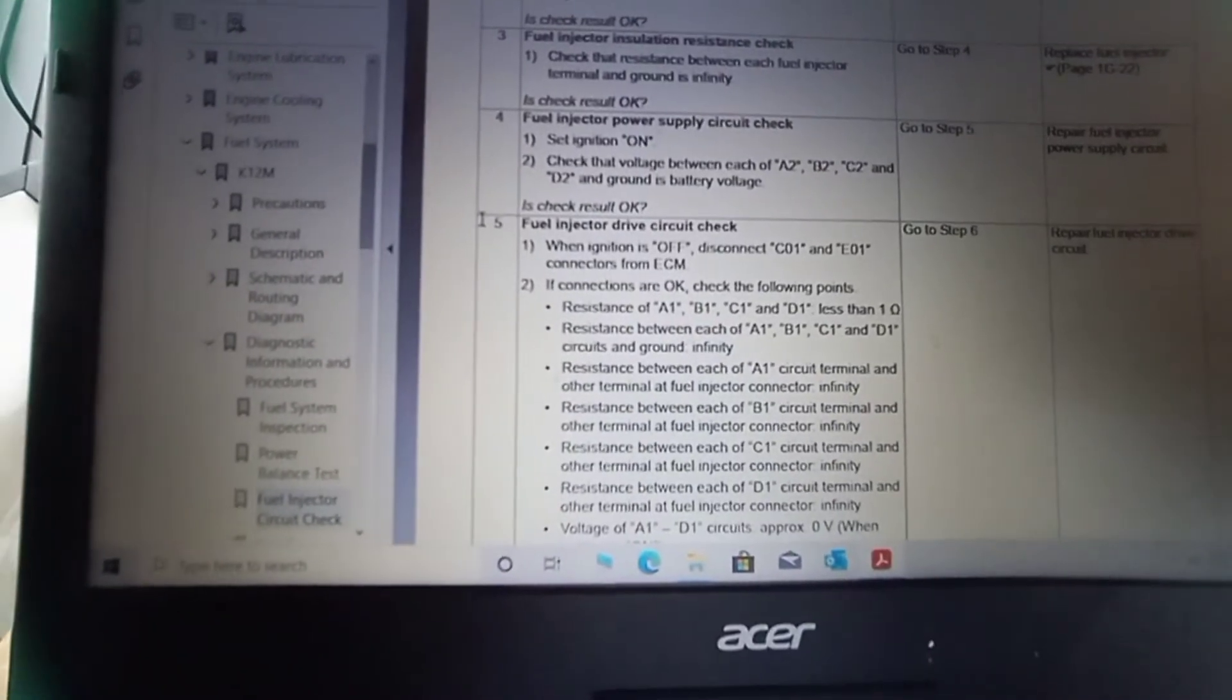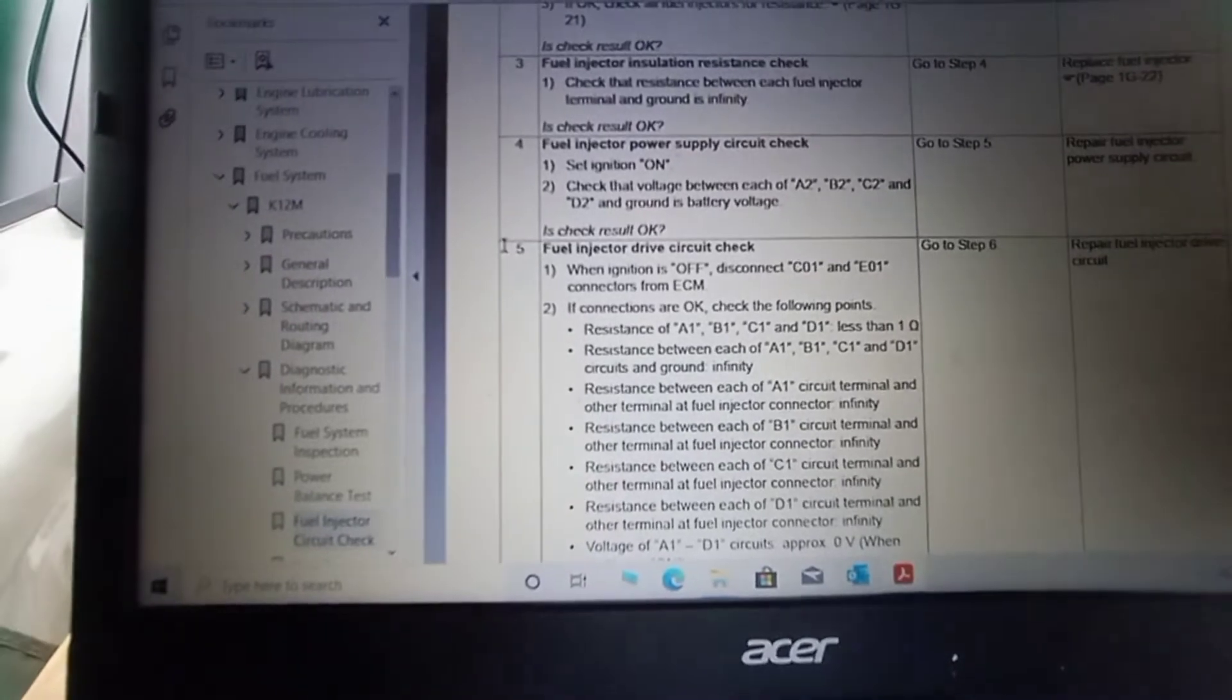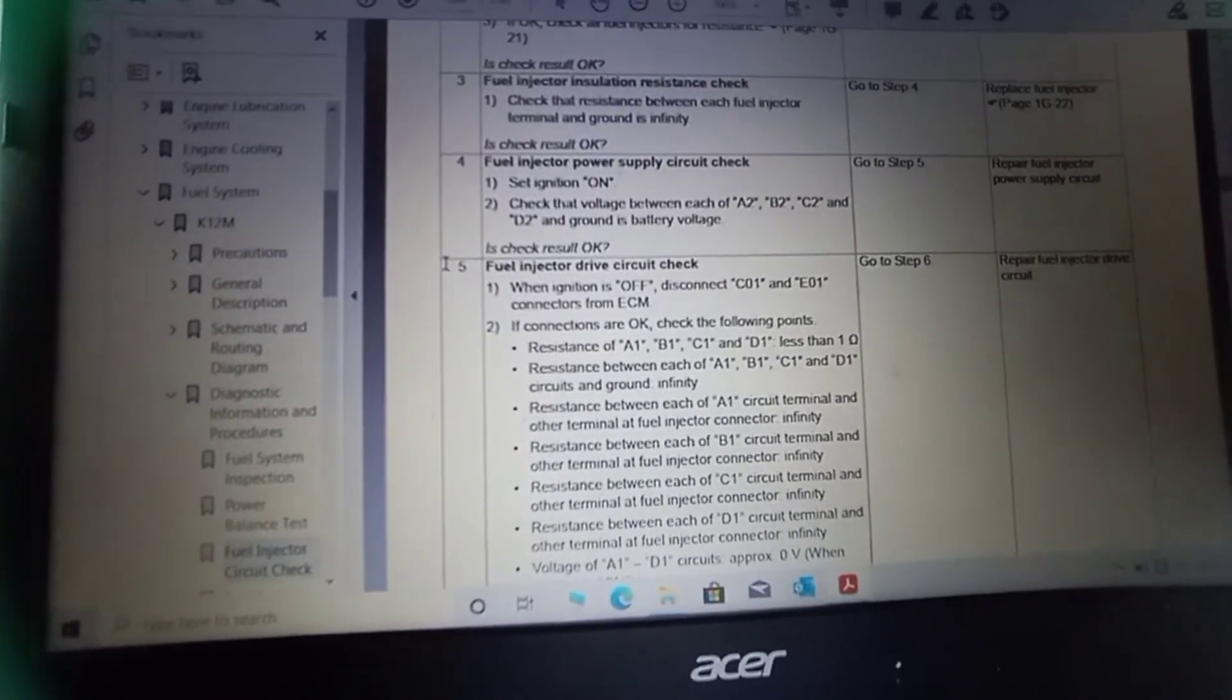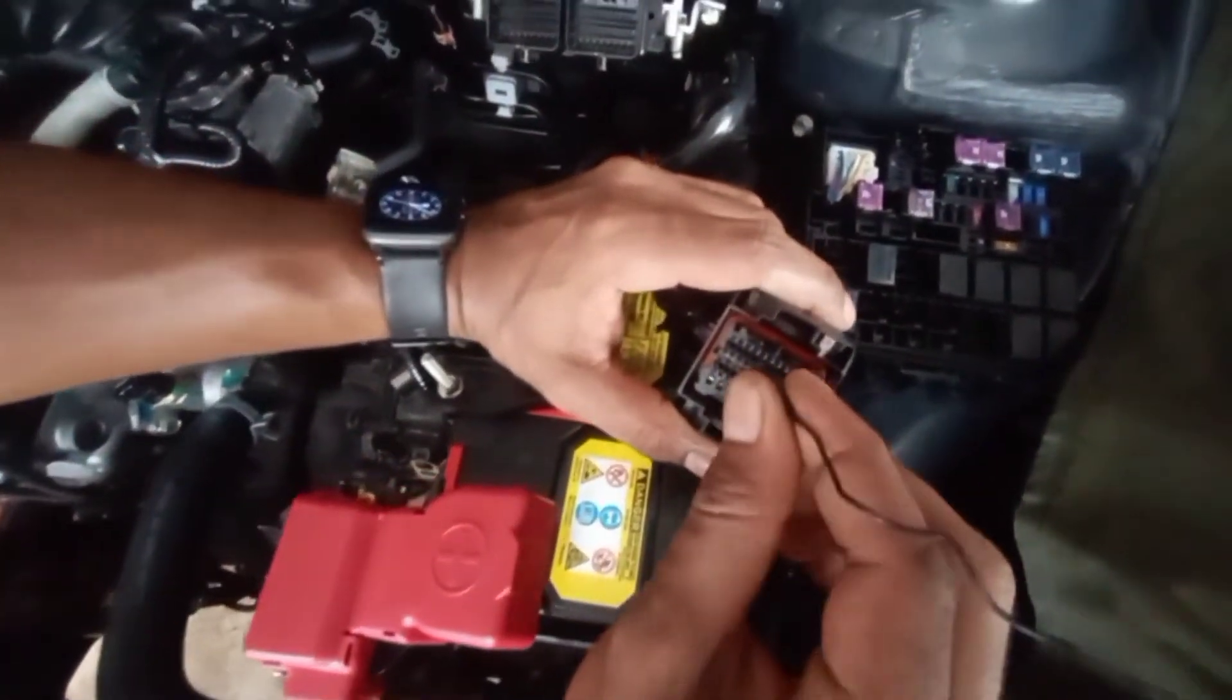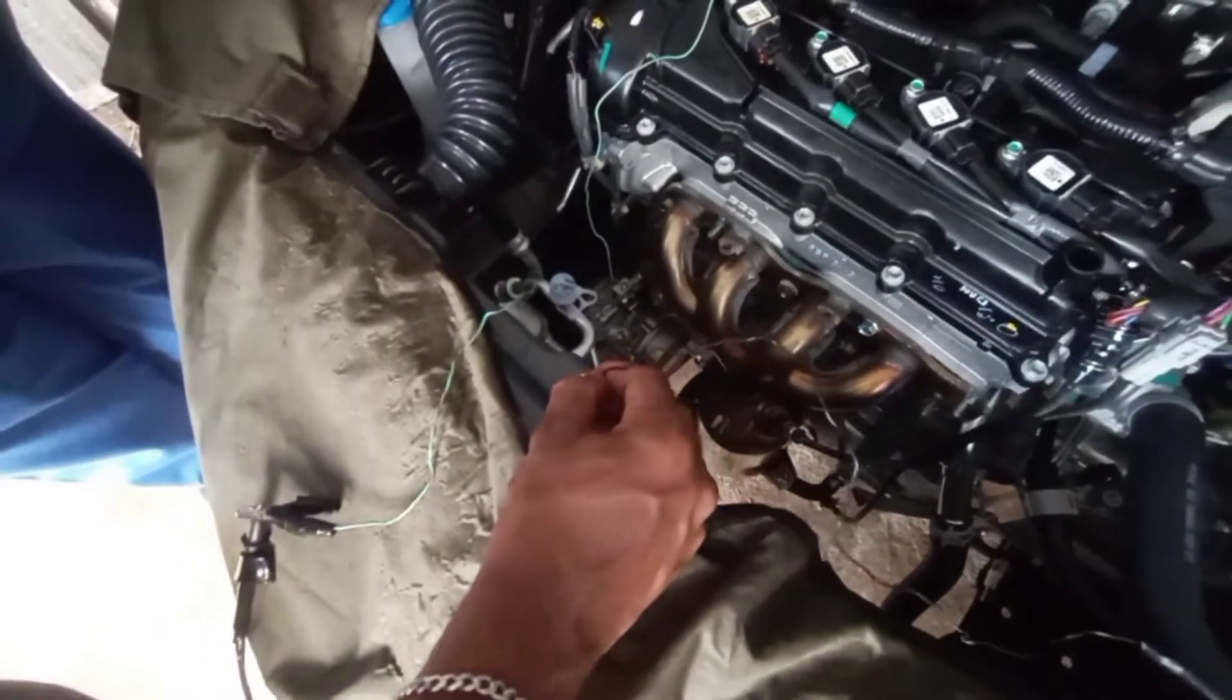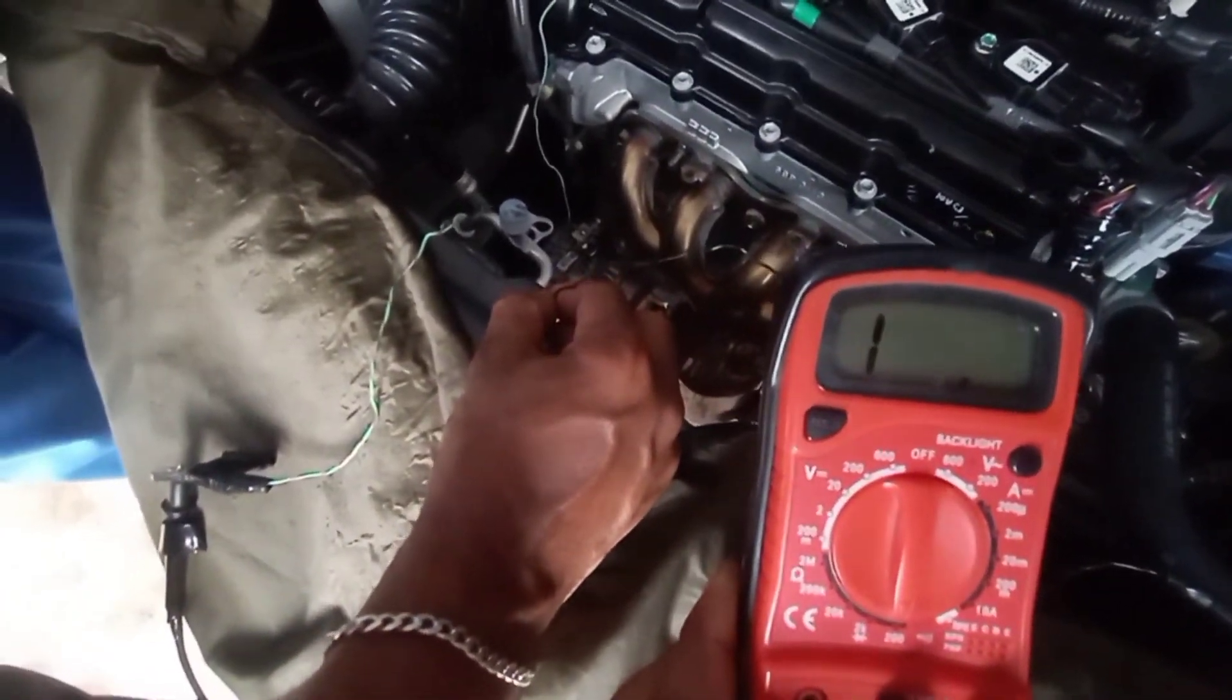Next we need to check A1 circuit and ground resistance between A1 circuit and ground, which need infinity. Disconnect the lead wire from ECM connector and check with body. Infinity, found okay.